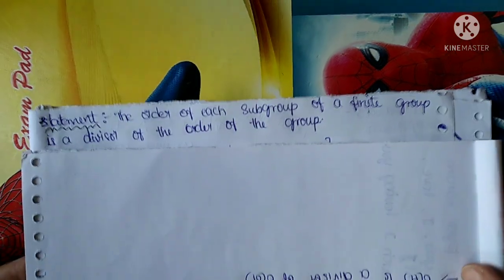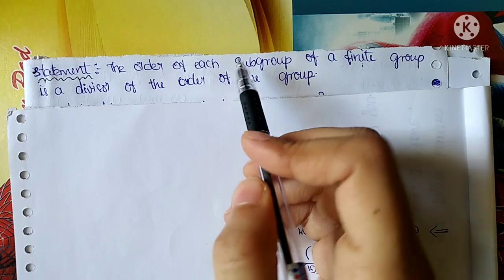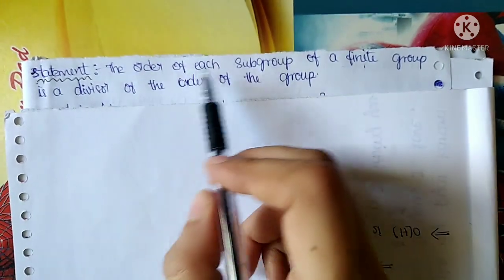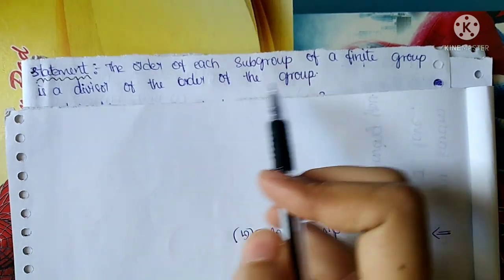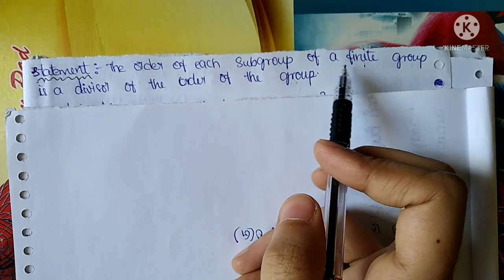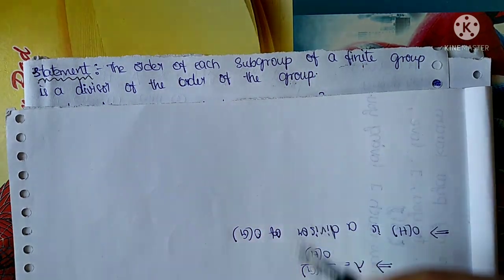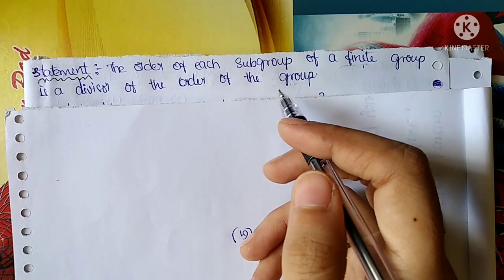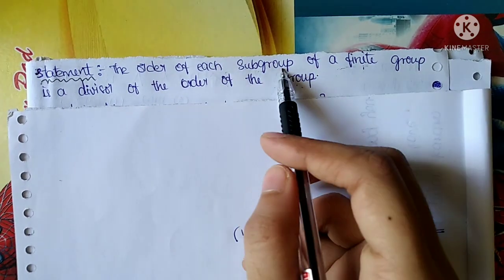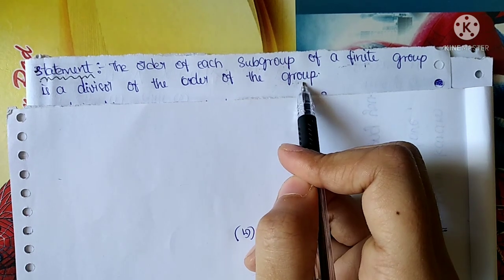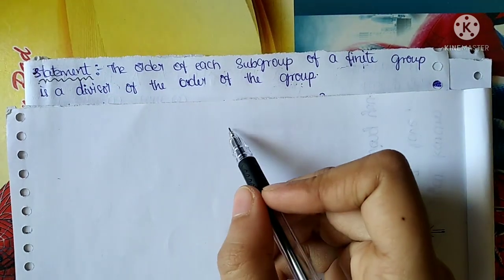The statement: The order of each subgroup of a finite group is a divisor of the order of the group. Here we will show the order of the subgroup and the order of the group. H is a subgroup, G is a finite group, and the order of the subgroup divides the order of the group. This is the Lagrange's theorem statement.